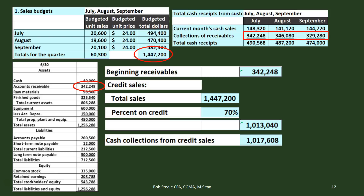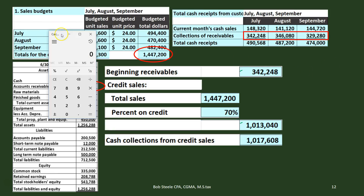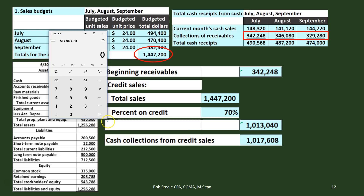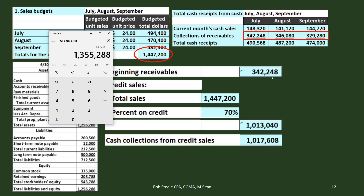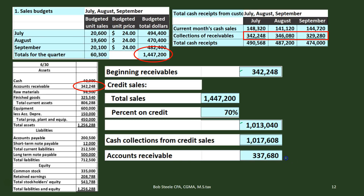If we add up the cash receipts, that's what we received in terms of cash — and that's going to be what reduces accounts receivable. So we take $342,248 plus $346,080 plus $329,280, which gives us $1,017,608. Then starting with $3,422,480 owed to us, plus $1,013,040 in sales on account, minus $1,017,608 collected — that gives us the ending balance of $337,680. That's our ending receivable, and that's what we're going to have on our balance sheet.